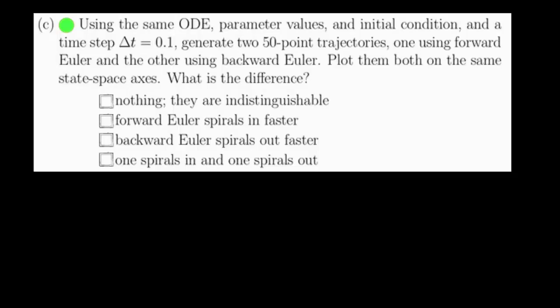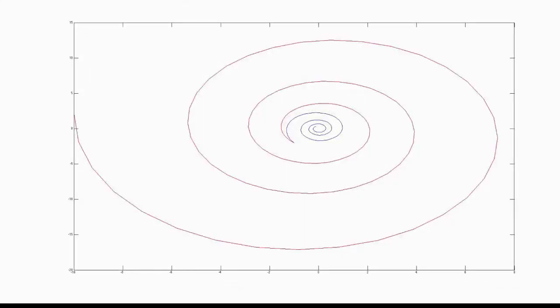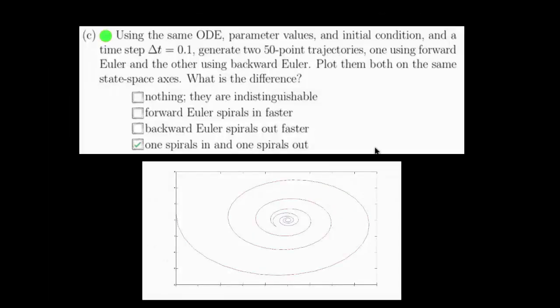Problem 2c asks us to use both a forward and backward Euler solver, using a time step of 0.1, to generate two 50-point trajectories, and plot them both together to see what the difference is. Here is that plot. The blue uses backward Euler, and the red uses forward Euler. Clearly, the difference here is that one is spiraling in, and one is spiraling out. This should not be surprising from what we just did. What's interesting here is this is an undamped, simple harmonic oscillator, yet one of these is growing in amplitude, and one of these is shrinking in amplitude. So the numerical solver is introducing dynamics that don't actually exist. But all we need to know for this problem is that the difference between these two is that one is spiraling in, and one is spiraling out. And this is the answer to question 2c.